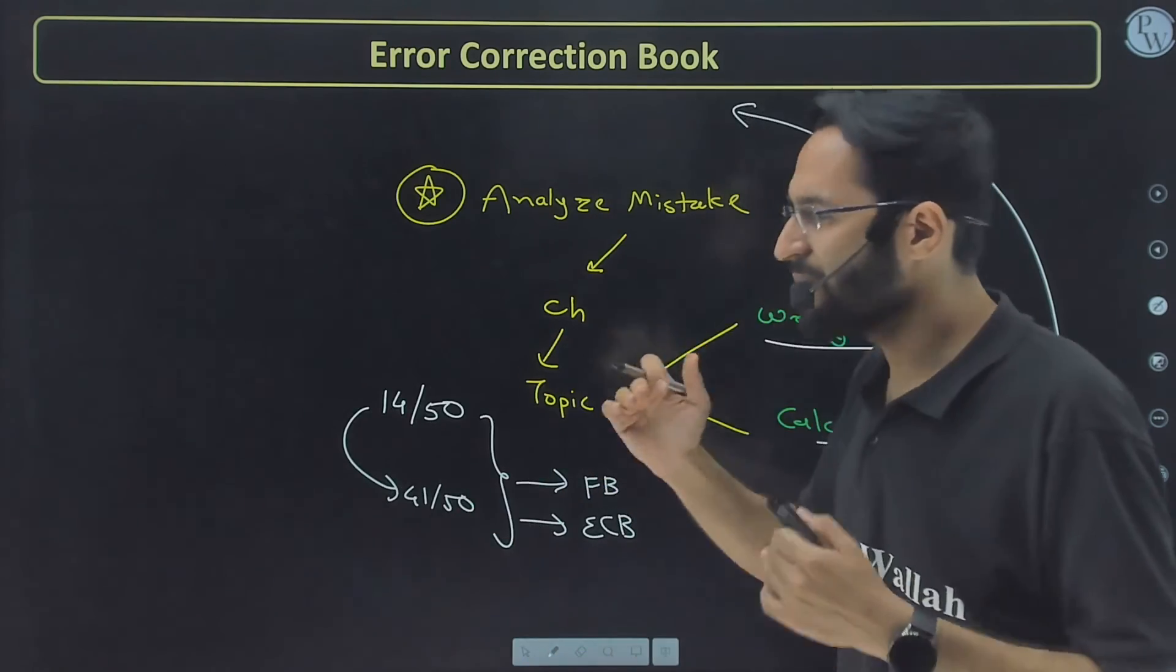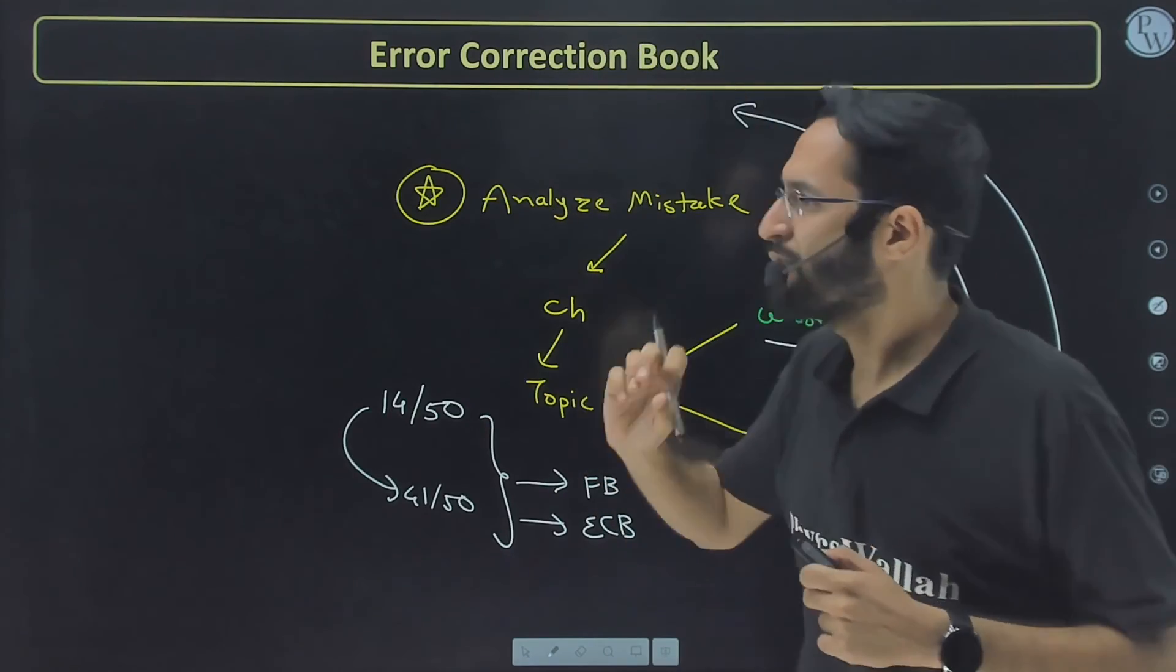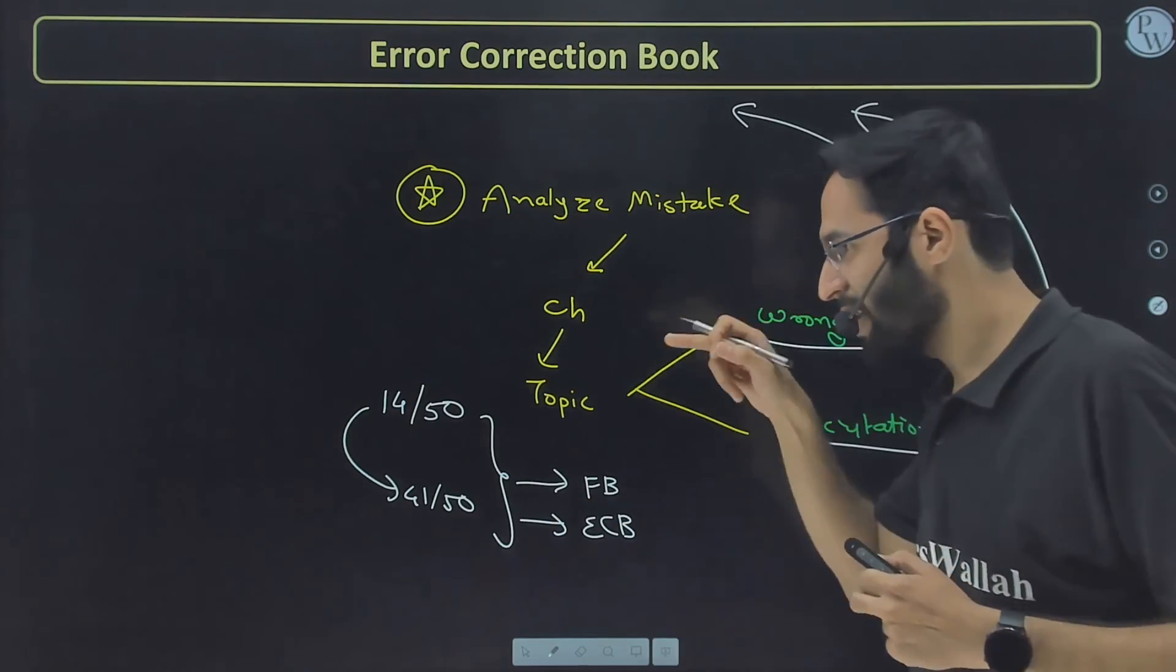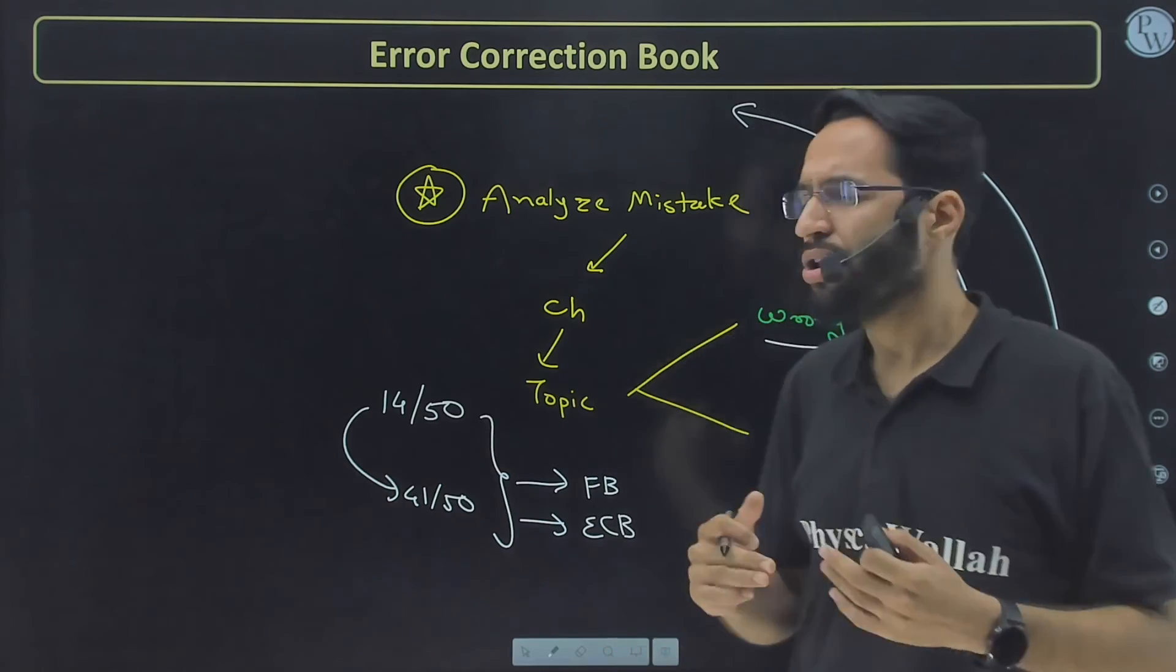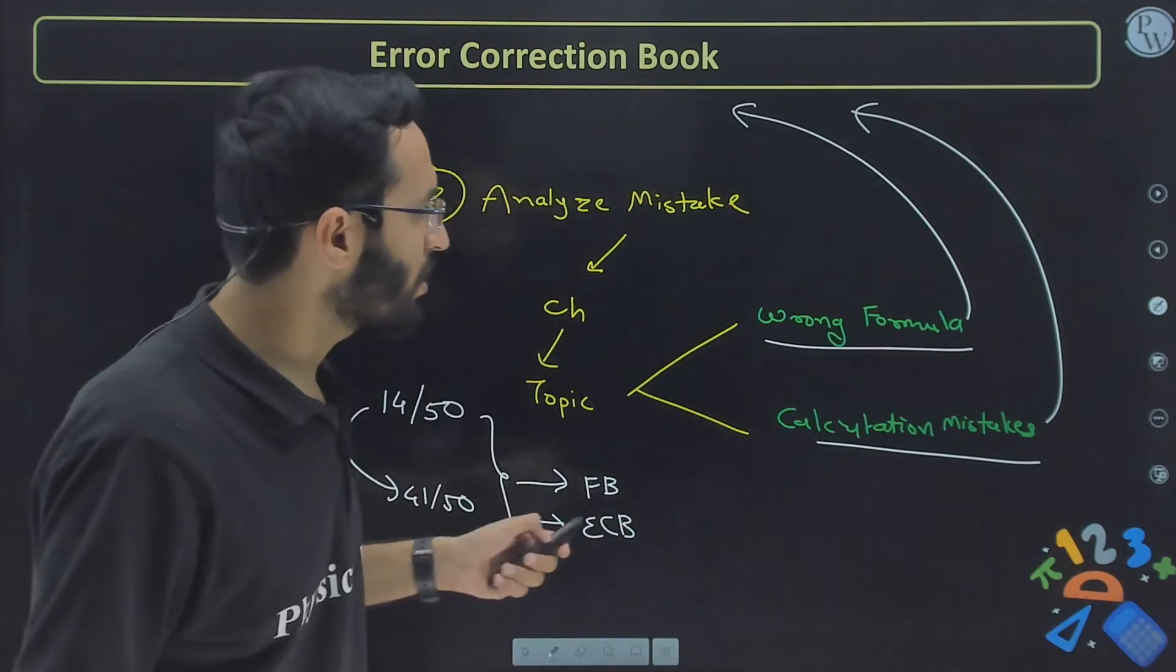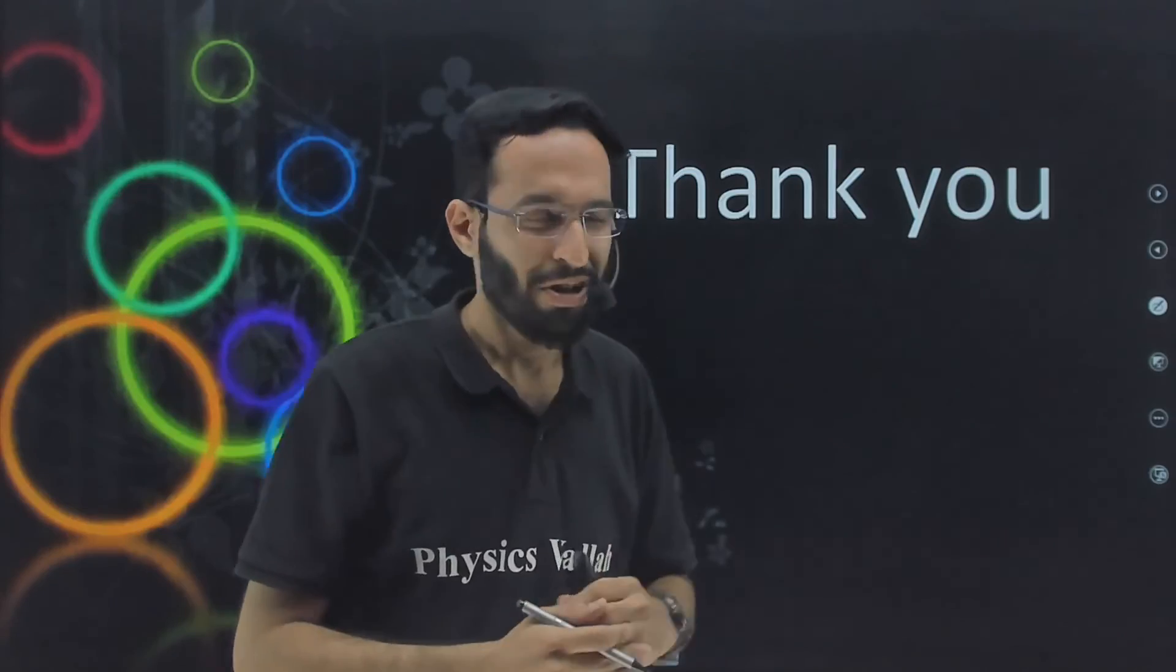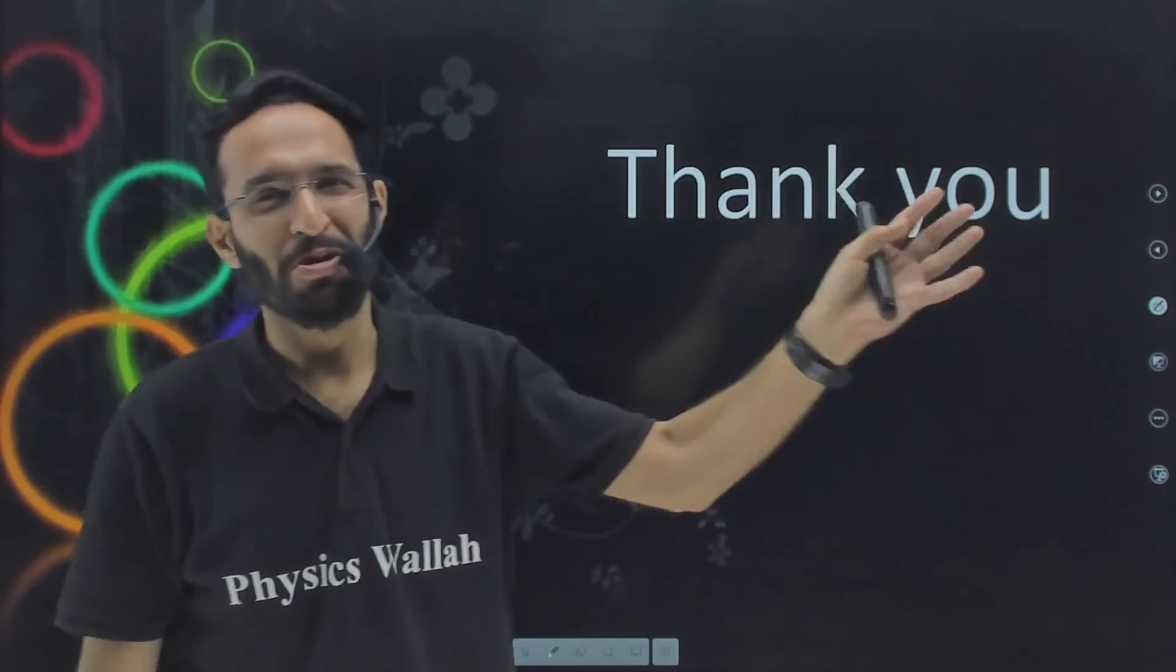The same question or similar type of question when she was appearing for next mock test, at that time she analyzed: oh, this was the same question or same formula I kept it wrong, so I should change this formula, this is the real formula. Oh, last time I had done this error, plus minus here, it is modulus, like that. So all this she overcame and she scored from 14 to 41. I hope if you will follow all these methods, easily you will be able to score high in your maths exam, from 50 to 60 to 70 to 80 to 90 to 95 plus. Wish you all the best. See you soon in Board Booster batch.